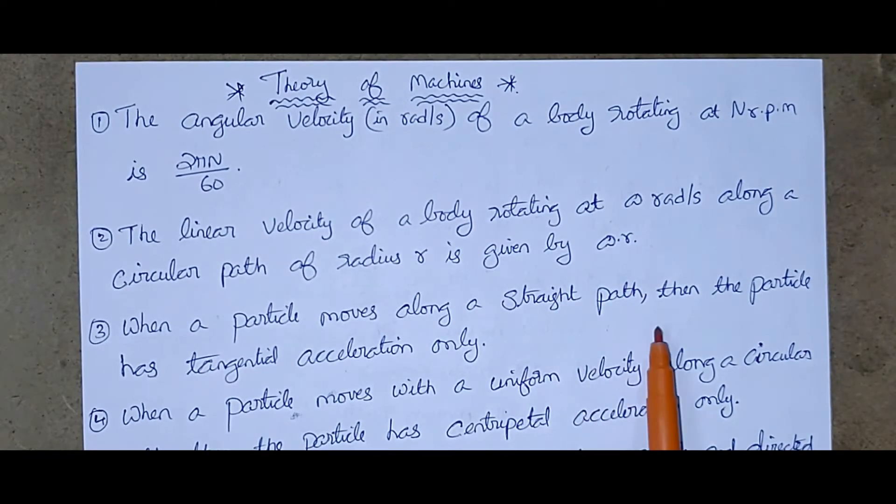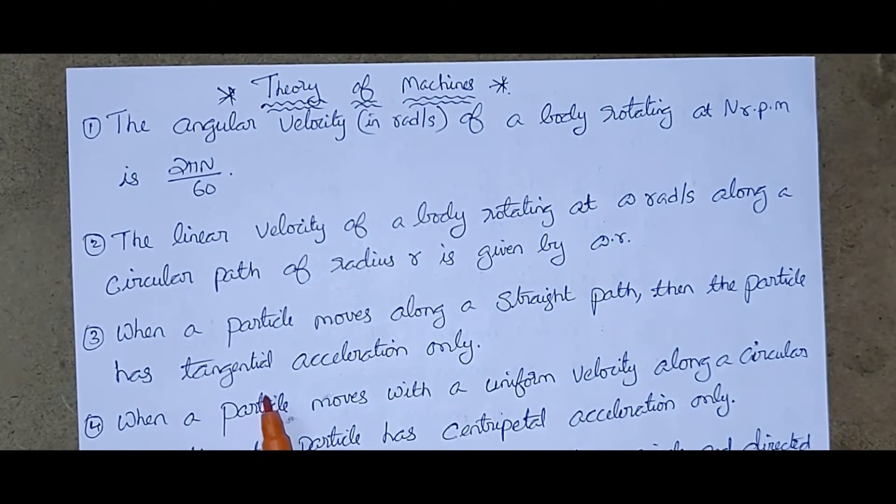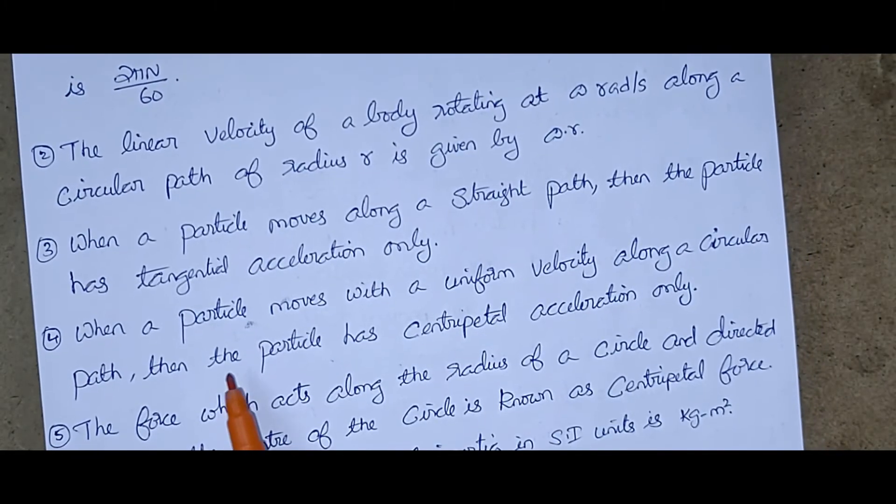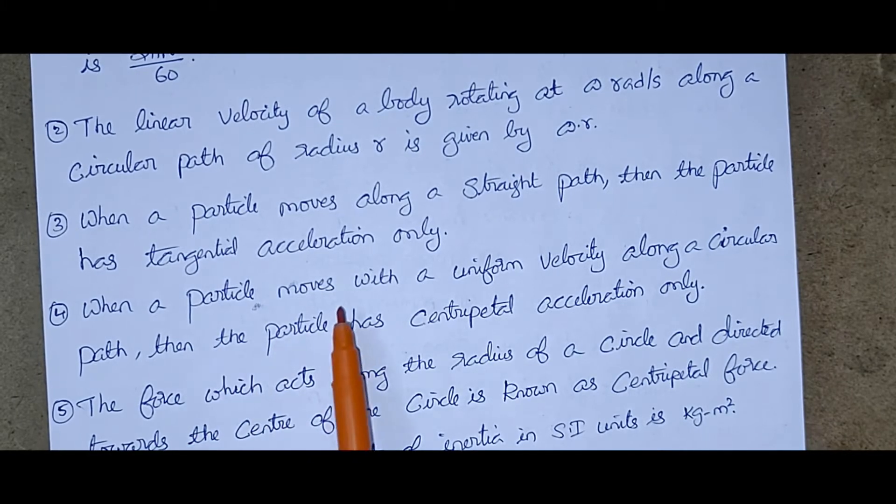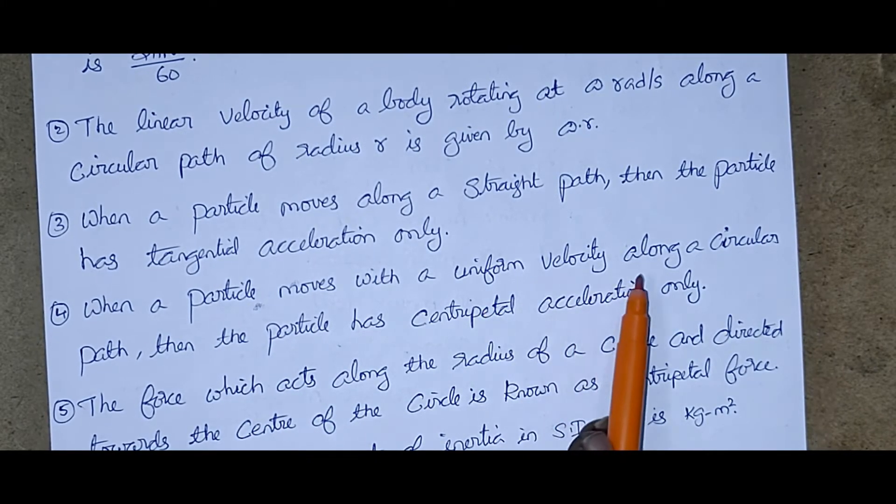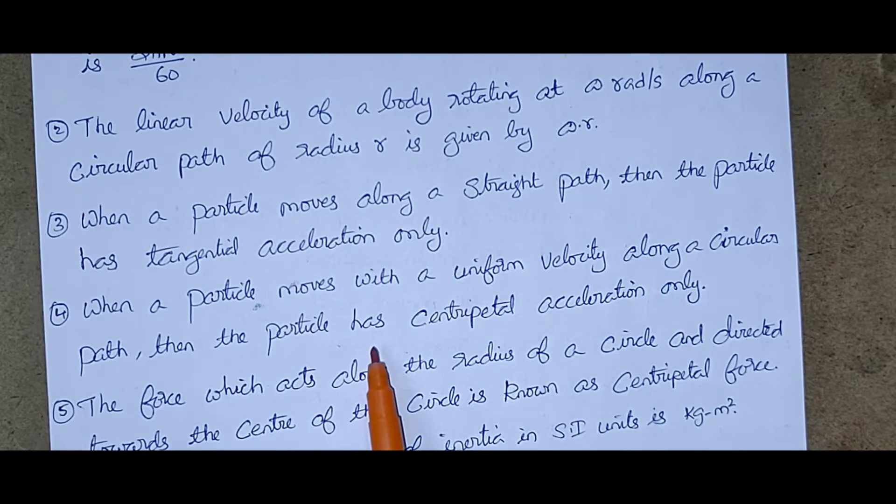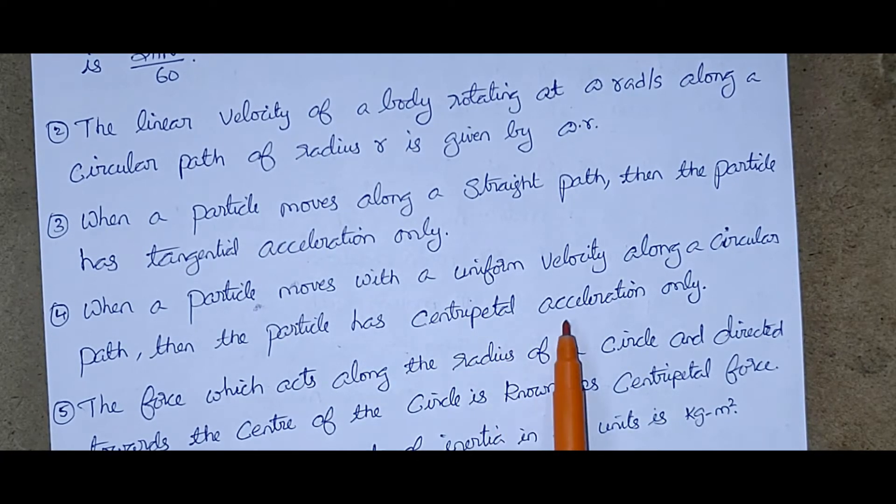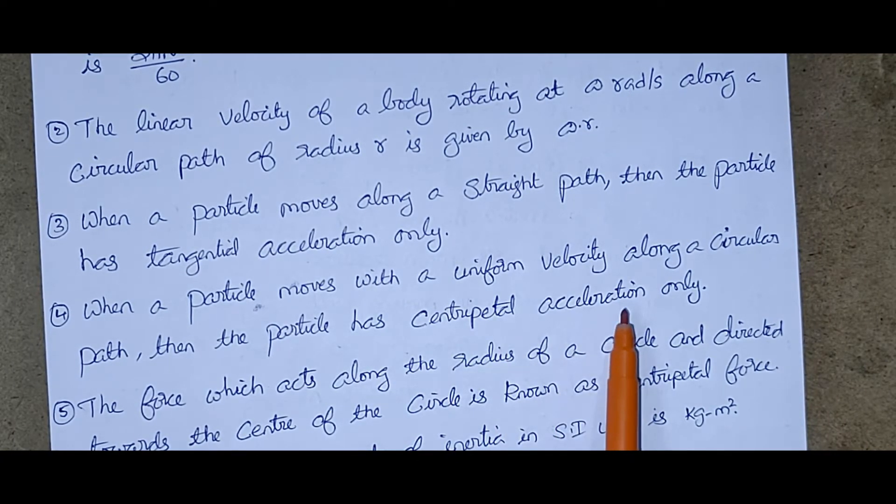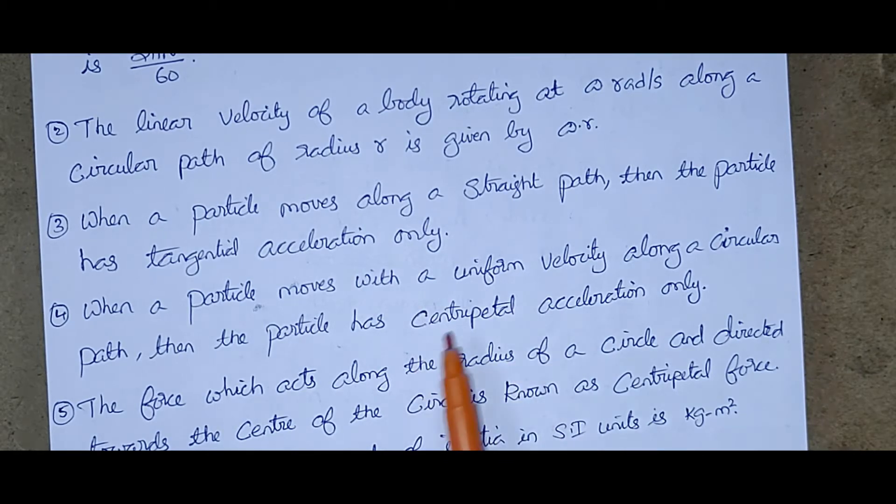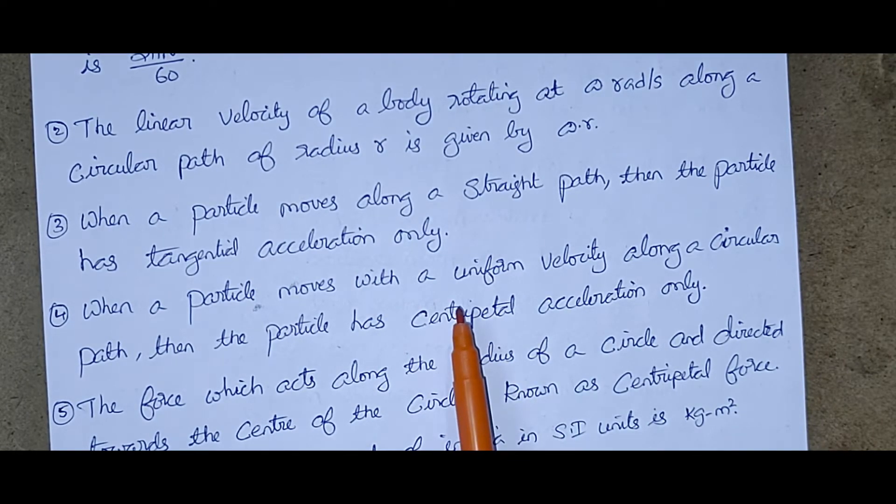When a particle moves along a straight path, then the particle has tangential acceleration only. When a particle moves with a uniform velocity along a circular path, then the particle has centripetal acceleration only.